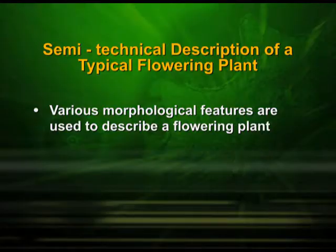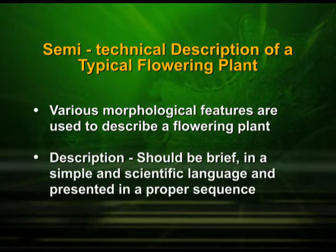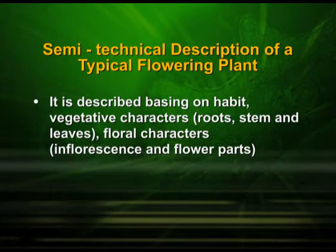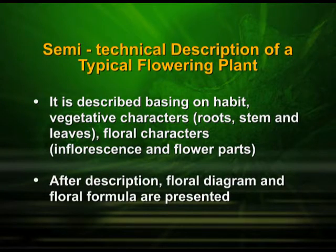There are certain semi-technical descriptions of a typical flowering plant, which become very convenient when we have to explain a flowering plant. The various morphological features are used to describe it. The description should be brief, in simple and scientific language, presented in a proper sequence. It is described based on habit, vegetative characters — that is the root, stem and leaves — floral characters, the inflorescence and flower parts. After description, the floral diagram and floral formula are presented.